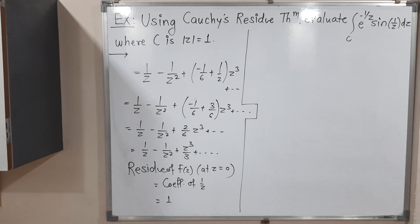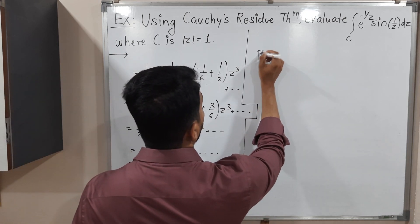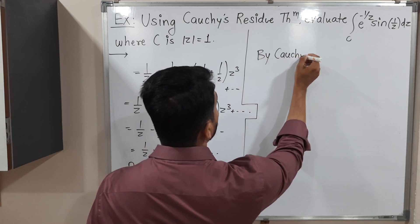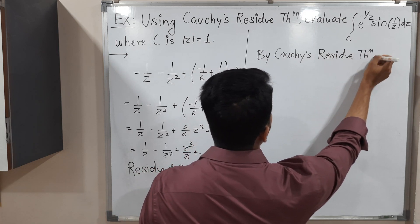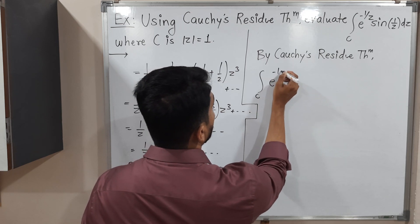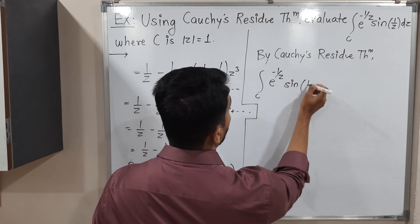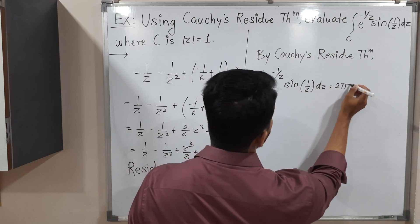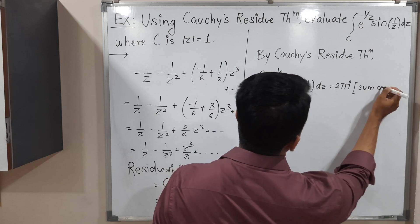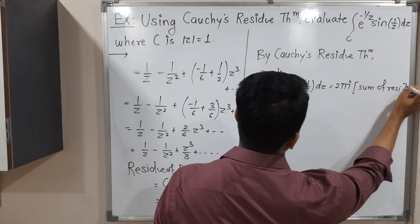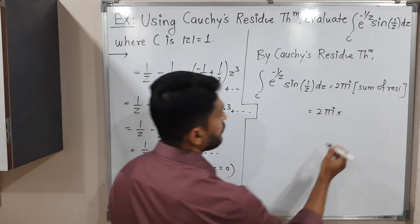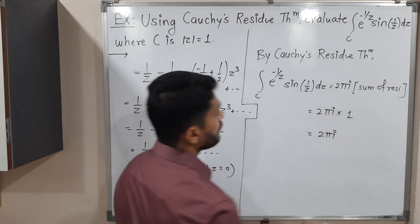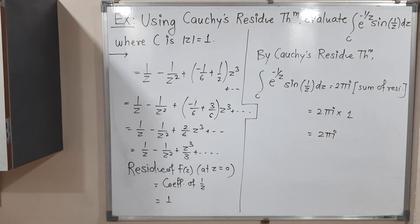By Cauchy's residue theorem, the integral of e^(-1/z) sin(1/z) dz over C equals 2πi times the sum of residues. We have only one residue and it equals 1, so the integral = 2πi × 1 = 2πi. This is the required value of the integration. The problem is complete.